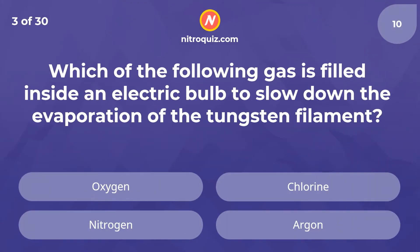Which of the following gases is filled inside an electric bulb to slow down the evaporation of the tungsten filament? The answer is argon.